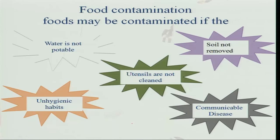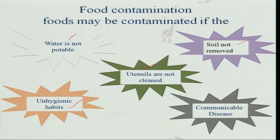Food may be contaminated if water is not potable, if soil is not removed, if utensils are not cleaned properly, and if you have unhygienic habits — like touching food without washing hands, sneezing or coughing on food, or cleaning your nose while preparing food. In all these cases, communicable diseases can spread, and a person with a communicable disease will definitely spread it to others.